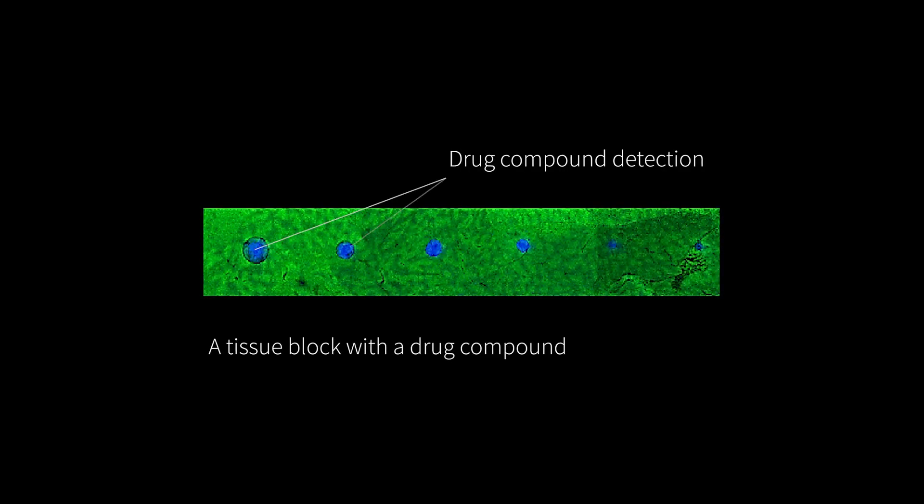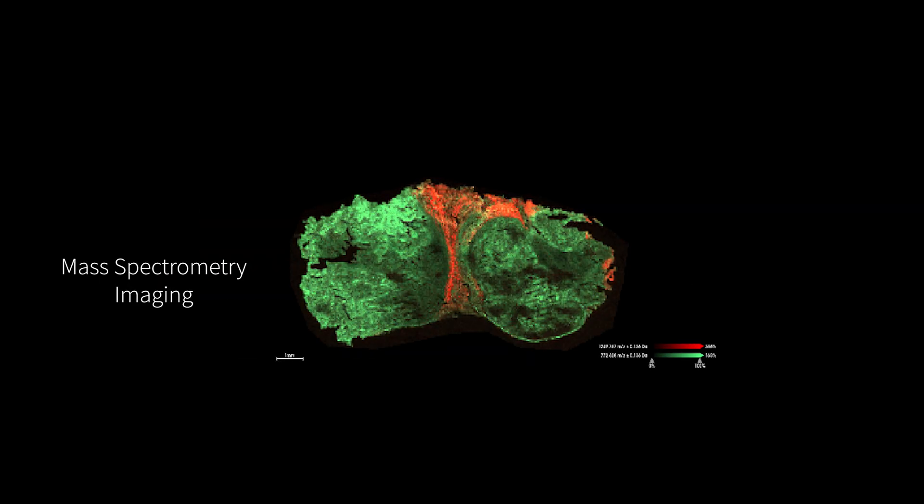MSI can also be used to look at bio-distribution in any other ex vivo tissue — not just brain tissue — to include things like organoids and human tissue, provided it's not embedded in paraffin. However, we can look at peptides and proteins if they are FFPE embedded.